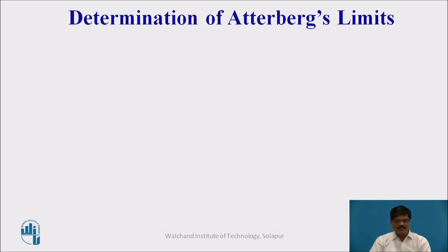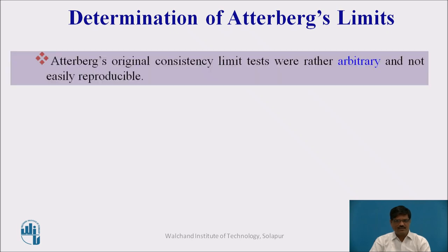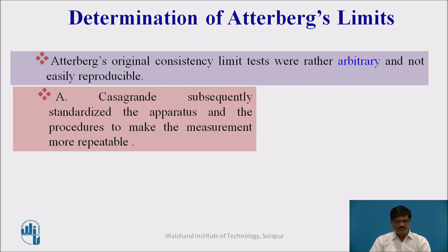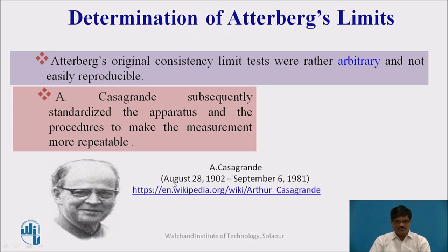Now we'll focus on determination of these Atterberg limits. Atterberg's original consistency limit tests were rather arbitrary and not easily reproducible. Therefore, one scientist called A. Casagrande subsequently standardized the apparatus and the procedure to make the measurement more repeatable. Casagrande has developed the apparatus which are used to find the Atterberg limits.